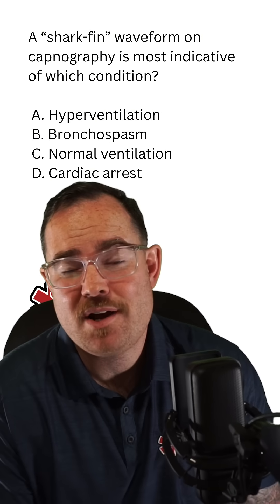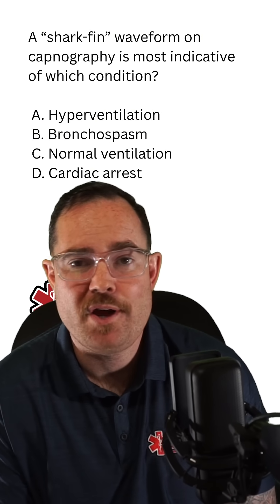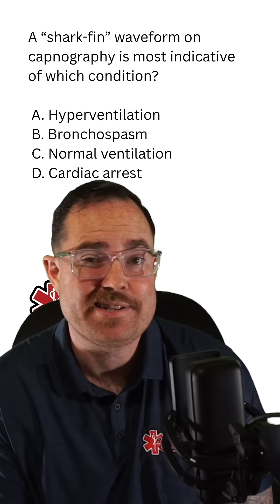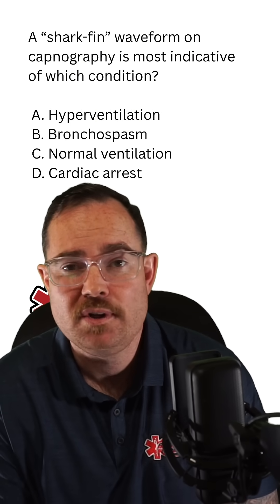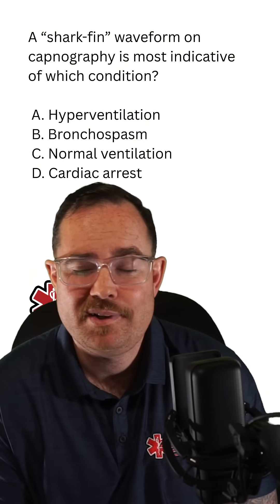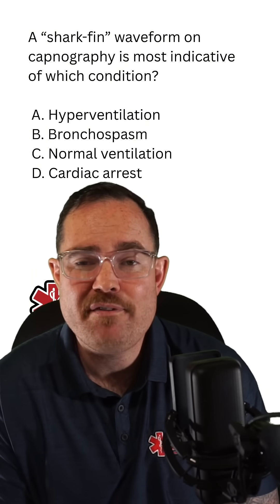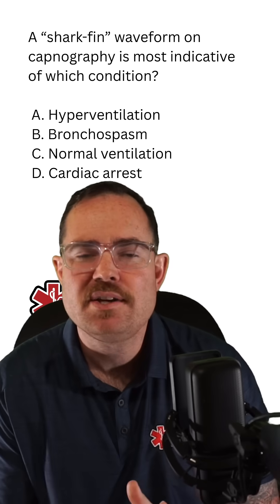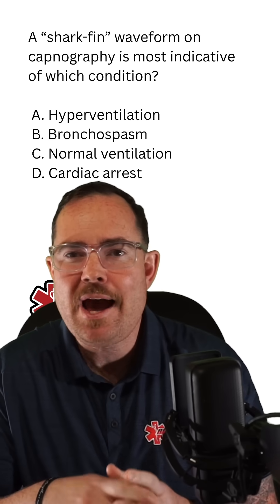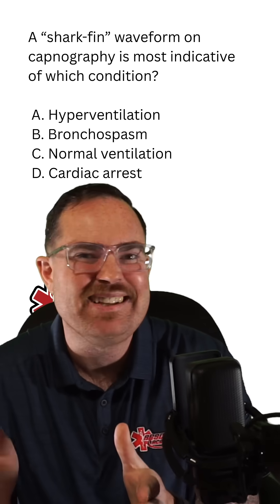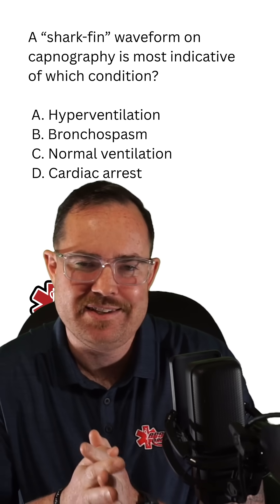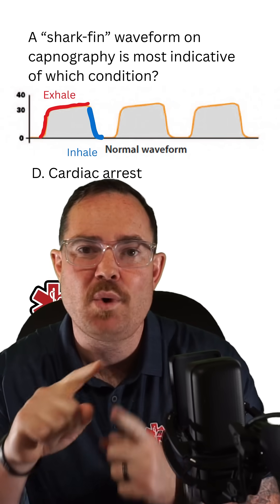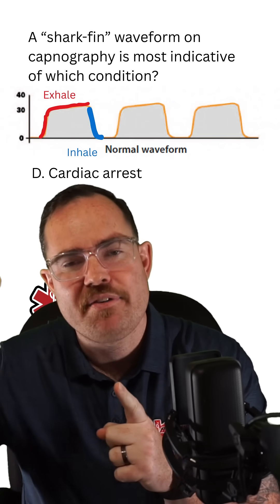With capnography, we don't just get a number — we all know 35 to 45 millimeters of mercury is considered normal. We can also get a waveform, and the waveform helps to see how long the exhalation phase is, because when you blow out, that is what we are seeing on that waveform.